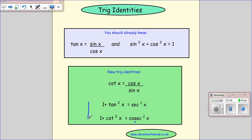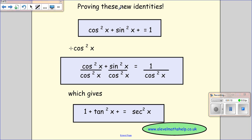Okay, we just need now to show you how to prove these two. Okay, so we start with the cos squared x plus sin squared x equals 1. And that shouldn't be there. We divide throughout by cos squared x.